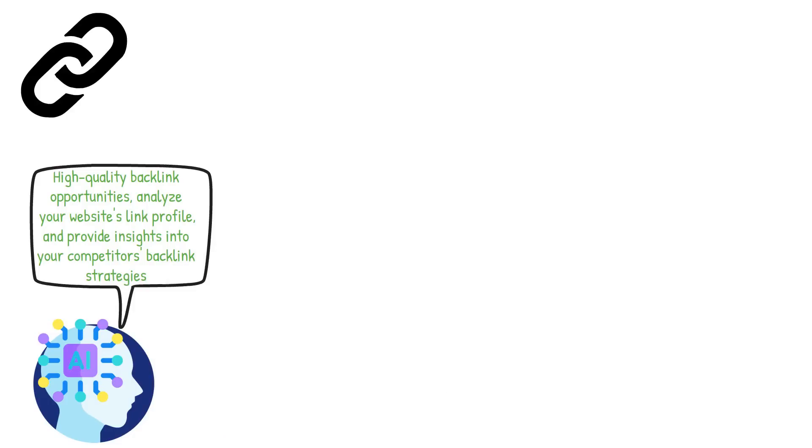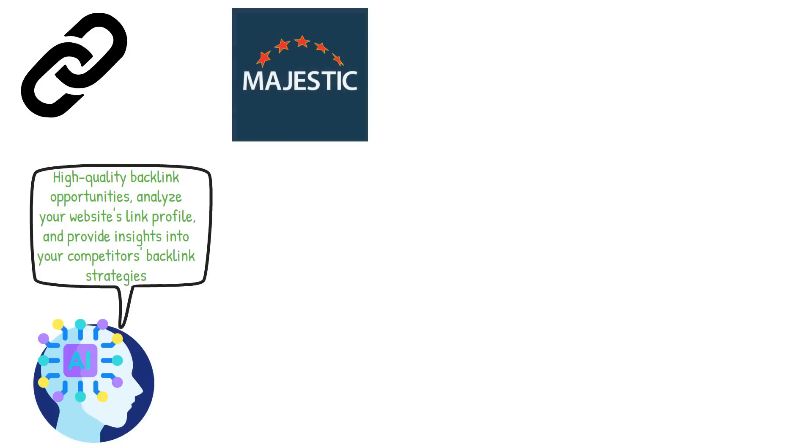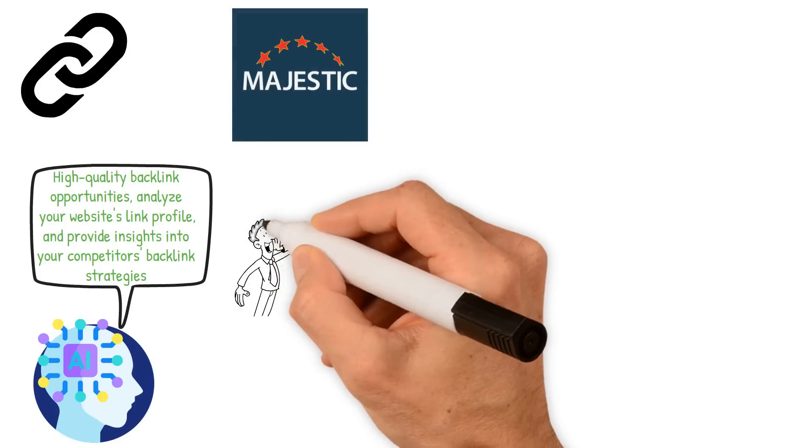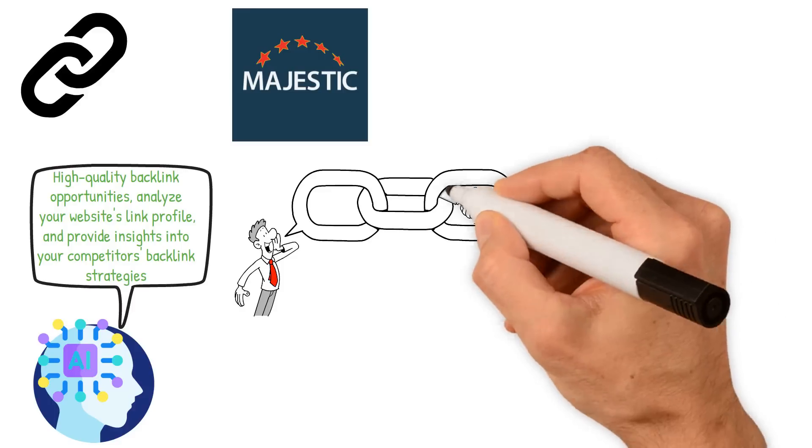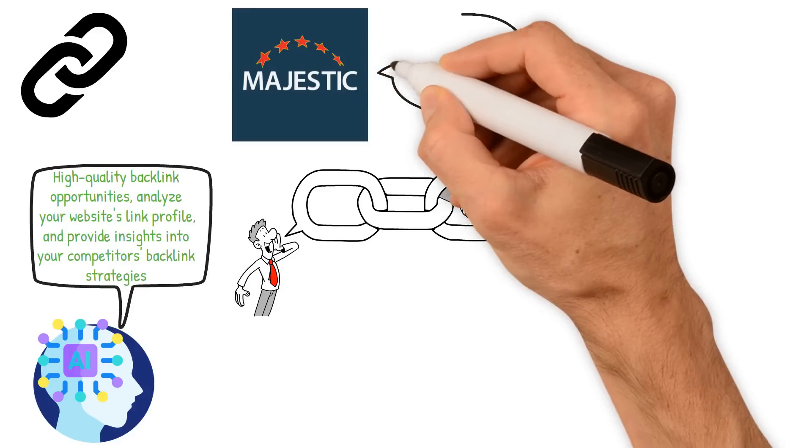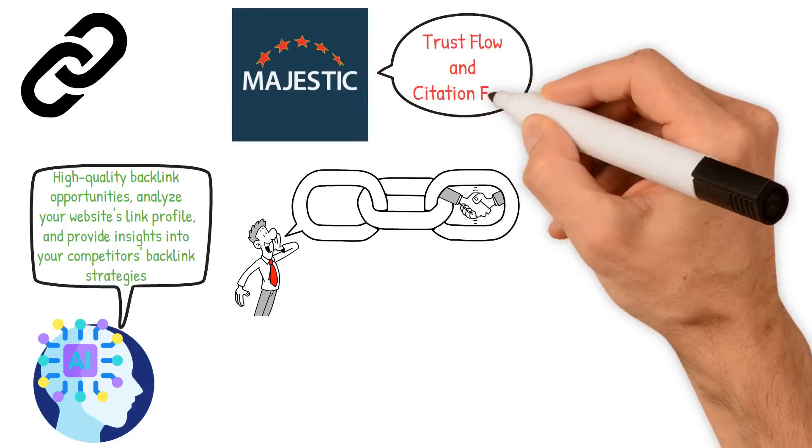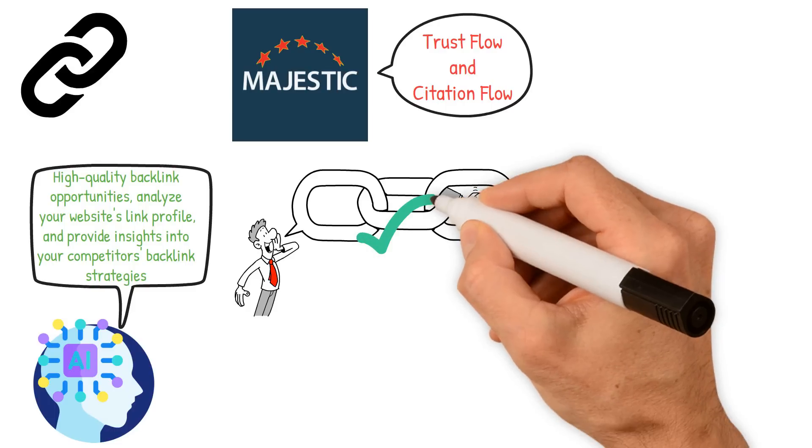One example of an AI-powered link building tool is Majestic. It's a comprehensive backlink analysis tool that provides insights into the backlinks of any website. The tool also provides metrics such as trust flow and citation flow, which can help you identify high-quality backlink opportunities.